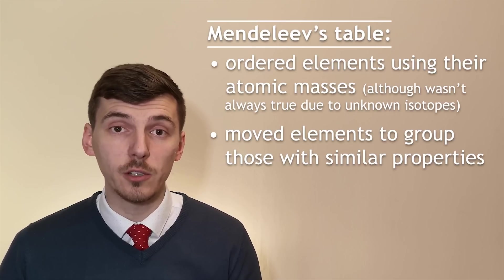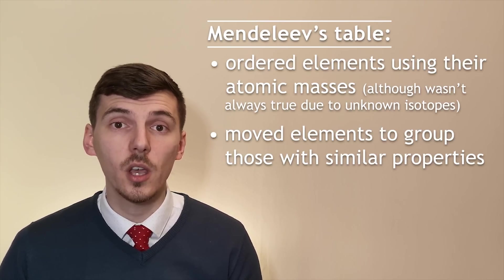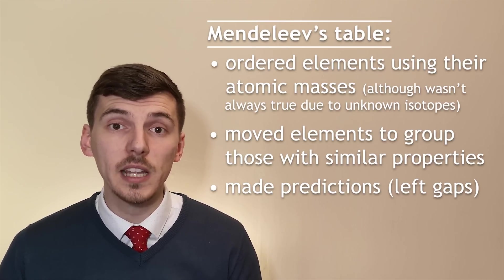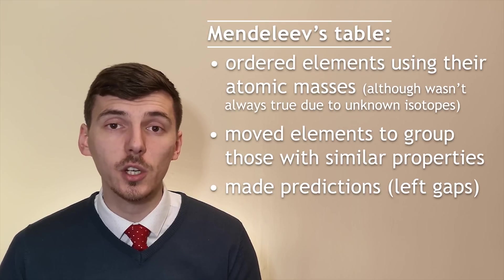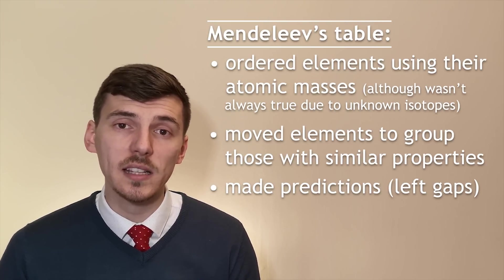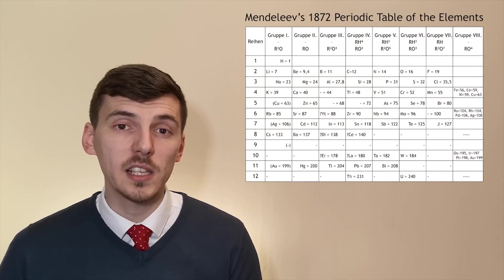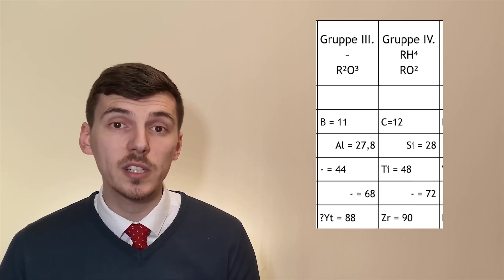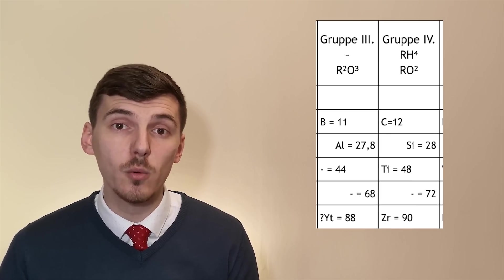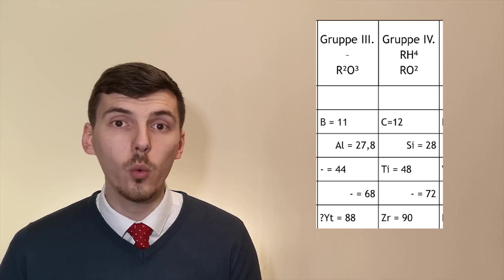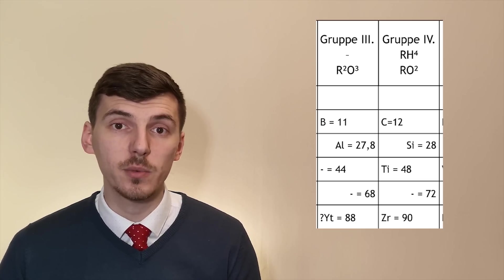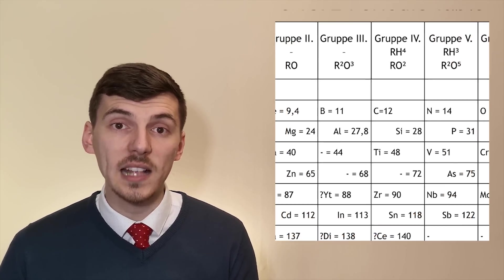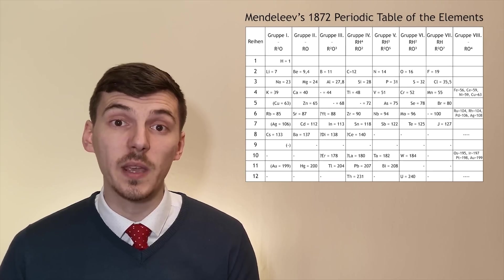Another thing that put Dmitry Mendeleev ahead of his competitors was the fact that he made predictions. His predictions included ideas about elements that we were yet to discover. Mendeleev did this by leaving gaps on his periodic table. In those gaps he wrote predictions about the properties that those elements would have. In the next century to come we would find out that Dmitry Mendeleev's predictions were very accurate and solidified his title as being the father of the modern periodic table.